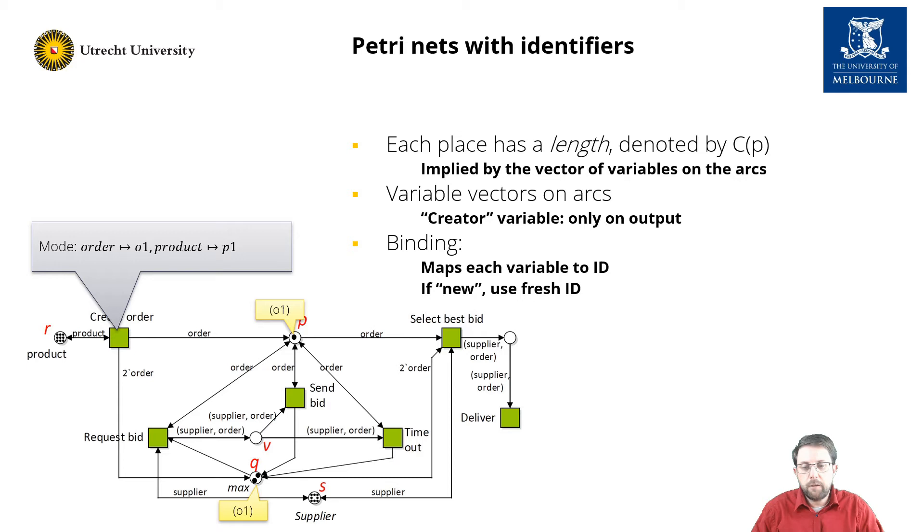Firing it results in one token in place p with identifier o1, and two tokens in place s, each with identifier o1 as well. Now transition request bid is enabled with a mode that assigns o1 to order and s1 to supplier, resulting in a new marking with a token in place v that carries the vector s1, o1.